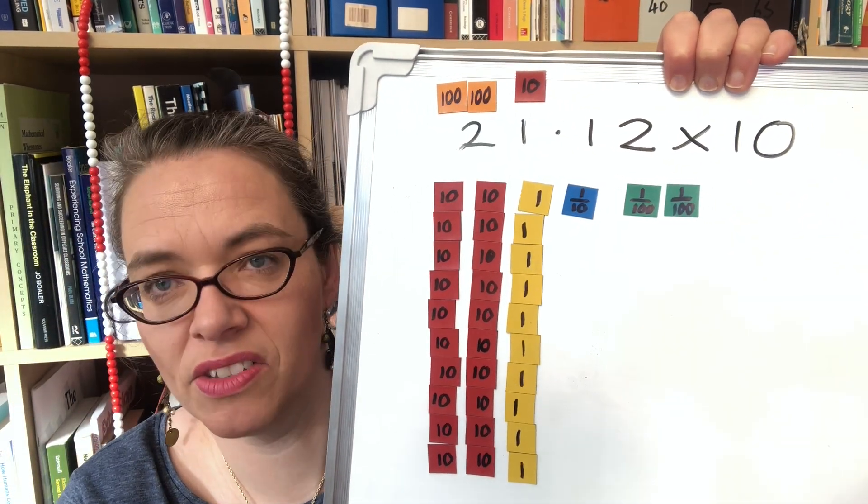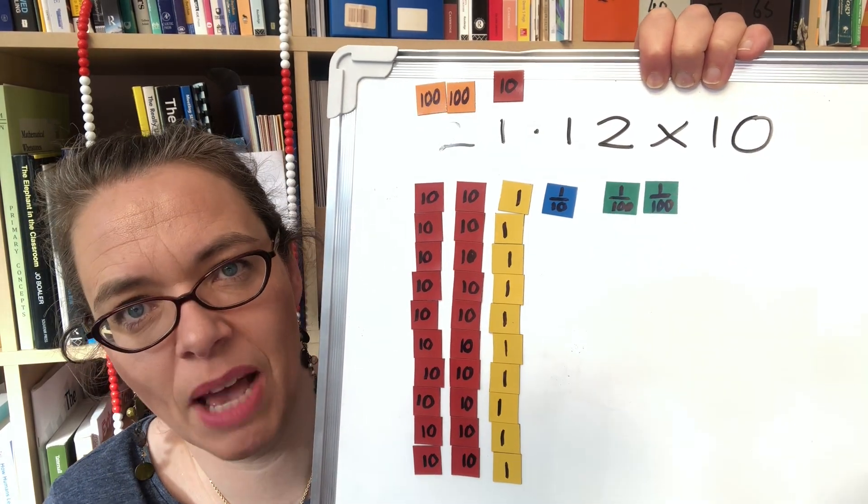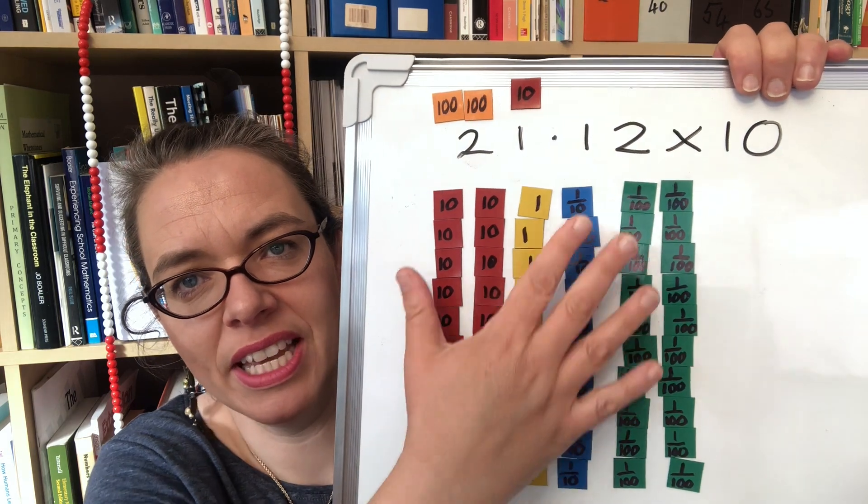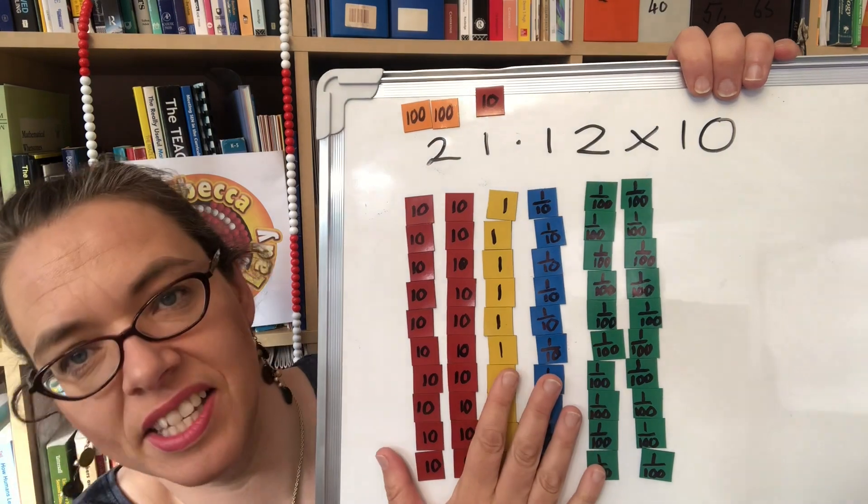And again we want 10 of this number here which is the 21.12 so we're going to have to complete those columns with 10 of each to really show that multiplication happening. So there it is, this is 21.12 times 10, this is your answer.